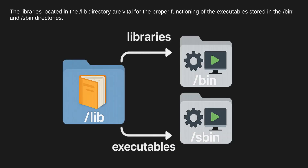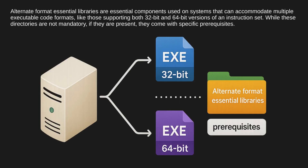The libraries located in the /lib directory are vital for the proper functioning of the executables stored in the /bin and /sbin directories. Alternate format essential libraries are essential components used on systems that can accommodate multiple executable code formats, like those supporting both 32-bit and 64-bit versions of an instruction set. While these directories are not mandatory, if they are present, they come with specific prerequisites.